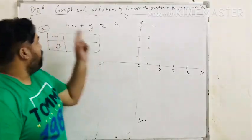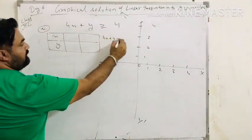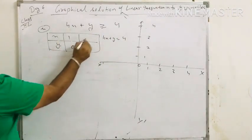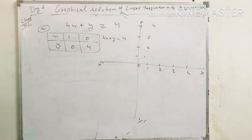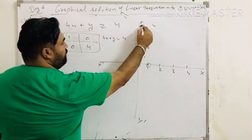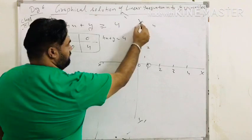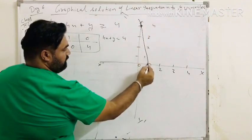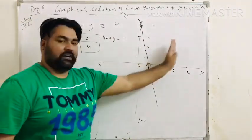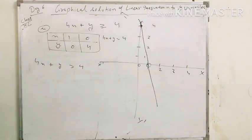The next question is 4x plus y greater than or equal to 4. First of all, we find the solution of the equation 4x plus y equals to 4. The solutions are 1,0 and 0,4. Now plot points 1,0 and 0,4 and draw a line. This line divides the plane into two halves: upper half and lower half. Now we have to solve this inequality 4x plus y greater than or equal to 4 by graphical solution.